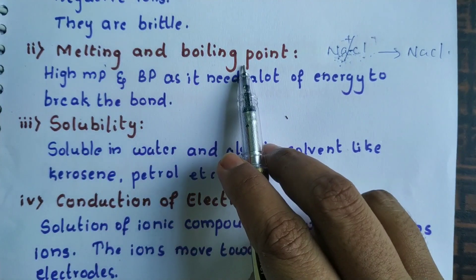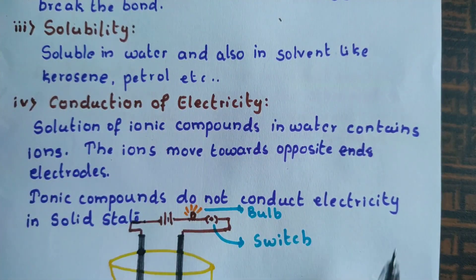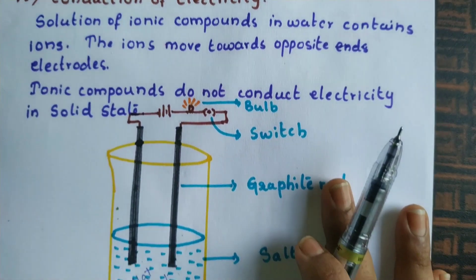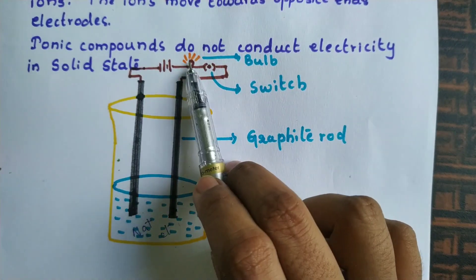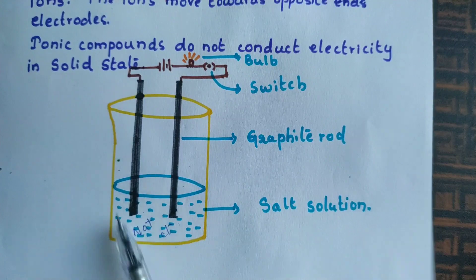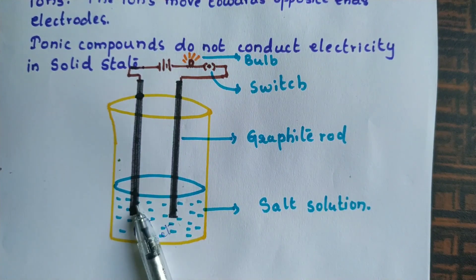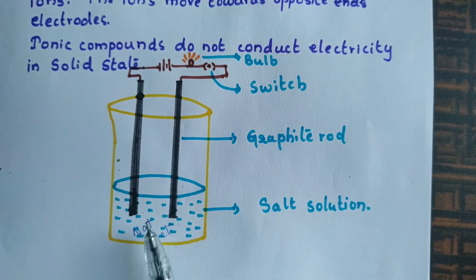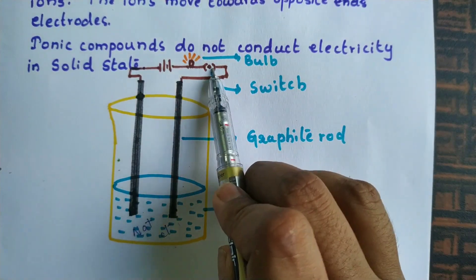The melting point and boiling point of ionic compounds are very high. Regarding solubility: they are soluble in water and some other solvents. As for electrical conductivity — yes, when they are in aqueous solution they conduct electricity. In an activity, a salt solution is placed in a beaker with two electrodes connected to a bulb, battery, and switch. When the switch is turned on, the bulb starts to glow, showing that the salt solution conducts electricity — meaning ionic compounds in solution conduct electricity.